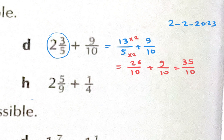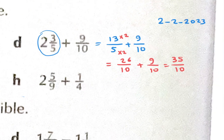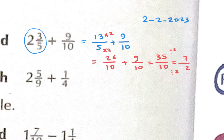Dividing 35 over 10 by 5 gives 7 over 2. We can convert to a mixed number: 7 is not divisible by 2, but 6 is, so 6 divided by 2 equals 3 with remainder 1. So the answer is 3 and 1 over 2, or 3 and a half.